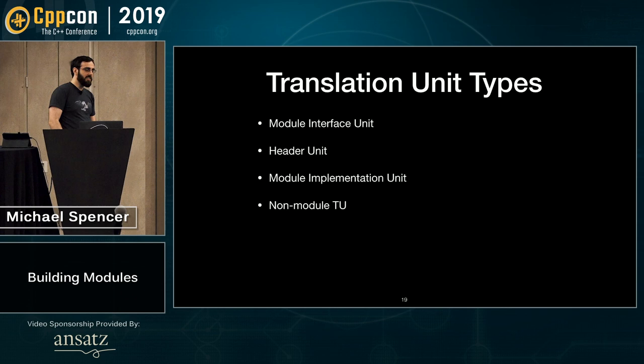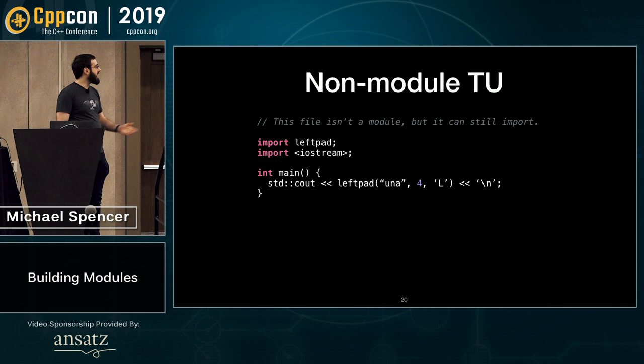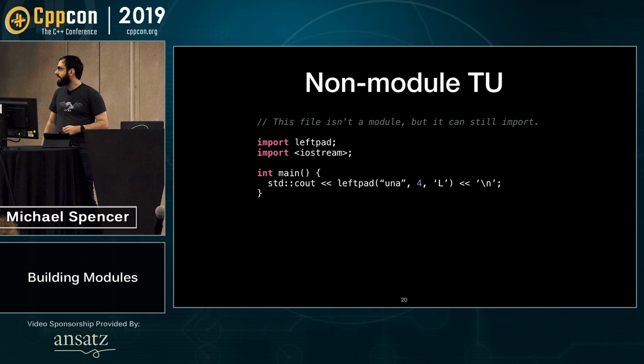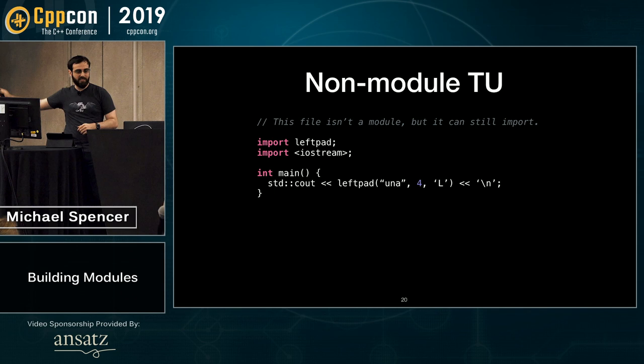Additionally, we have non-modular translation units. These are the TUs we've had since C++98 and even before. The only new thing is that they can import modules. They are not a module themselves — they are a member of the global module. They can use modular things, and there's no namespacing: 'left pad' is just the left pad function.